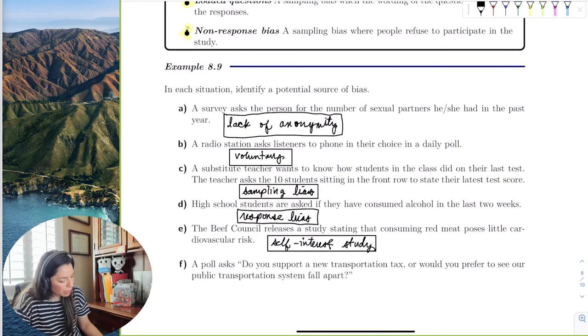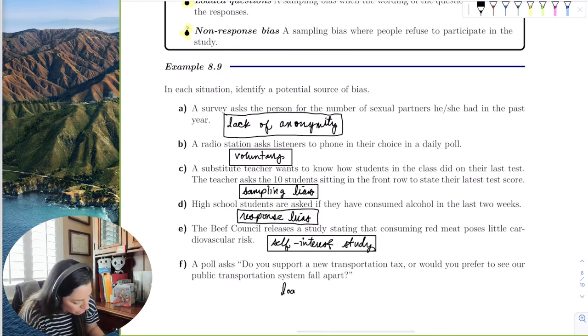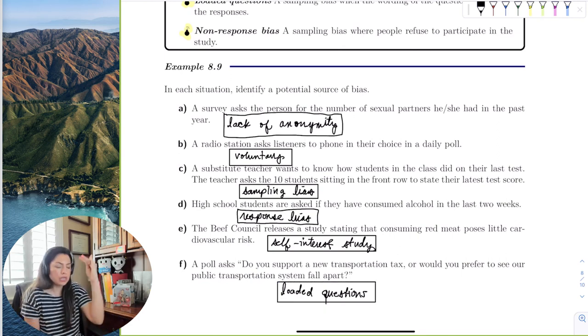Last one: A poll asks, 'Do you support a new transportation tax, or would you prefer to see our public transportation fall apart?' Do I support a transportation tax, and then do I want my public transportation to fall apart? No, I do not want the buses to explode, and I do want to support that transportation tax. There's just too much going on here. This is definitely loaded questions. It's okay if you have a lot of questions, you just need to make sure they're not loaded and that they're separated into different parts—question one, question two—make it very simple.